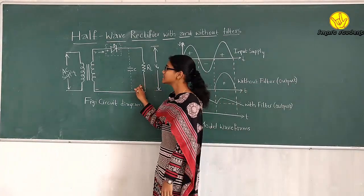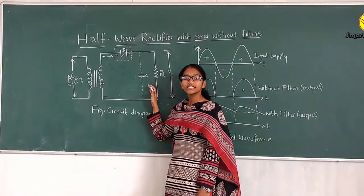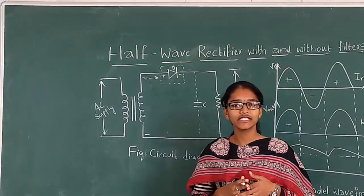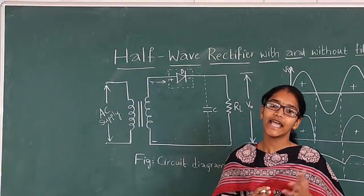And now we consider the capacitor filter. The capacitor filter is a low pass filter. The main function of this capacitor filter is that it allows AC and blocks DC.